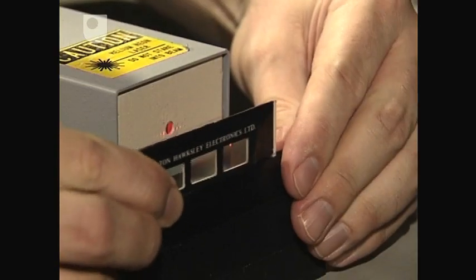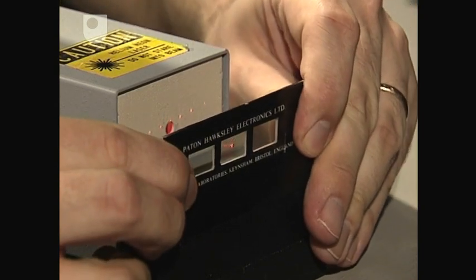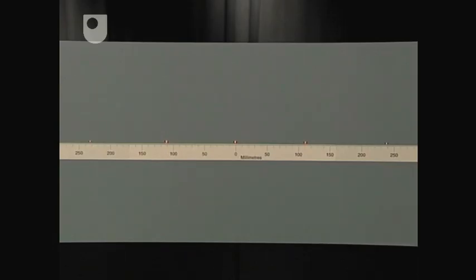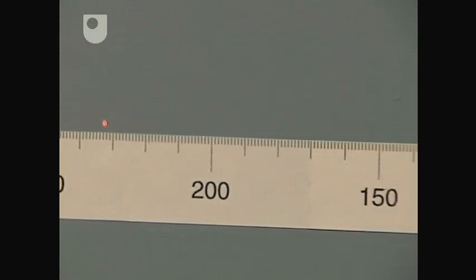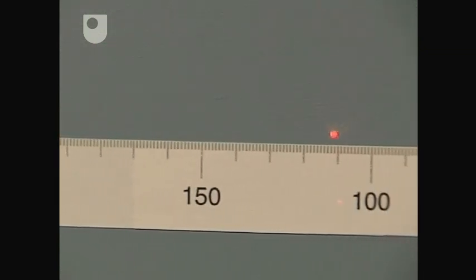So first of all I'll shine the red laser beam through the grating with 300 lines per millimeter. Instead of smoothly changing dark and bright regions, the diffraction pattern this time consists of a series of isolated spots on the screen.